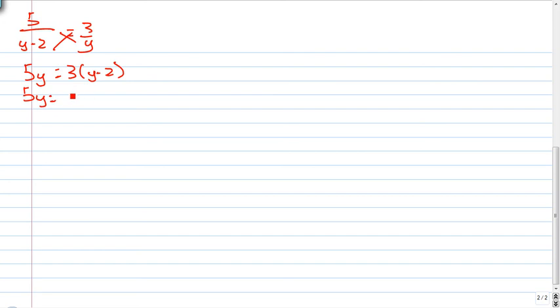And 5y, if you expand the brackets, it becomes 3y minus 6. And then, if you bring 3y over to this side of the equation, you get 5y minus 3y equals to minus 6. You get 2y equals to minus 6. You get y equals to minus 6 over 2. You get y equals to minus 3.